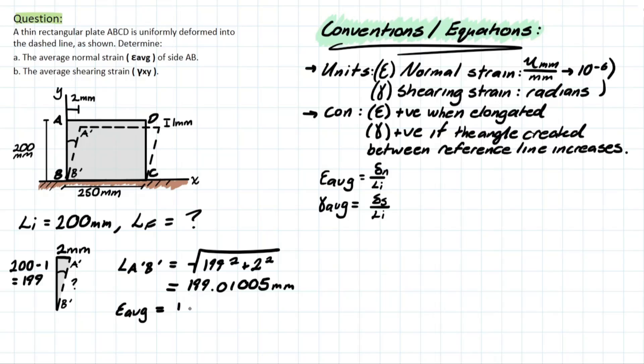So what do we have? If we had our final length determined as 199.01005, we can take away the initial length to get the deformation. And we're dividing by L initial for this formula. So we're taking 200 as previously mentioned. And we get a final answer for normal strain average equal to negative 0.00495.